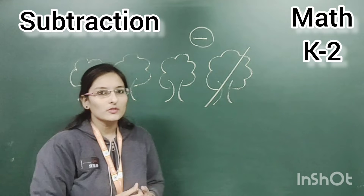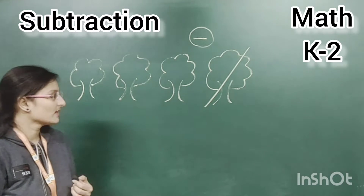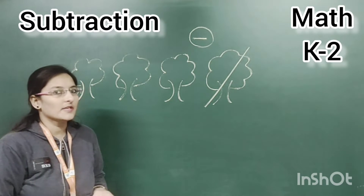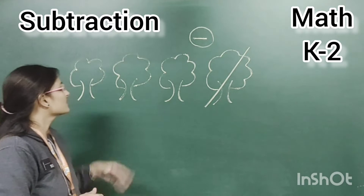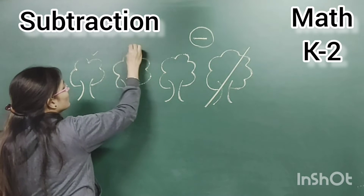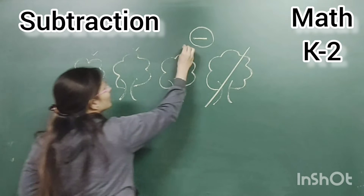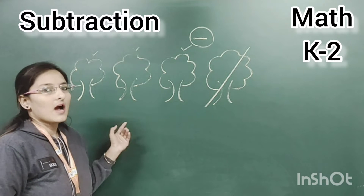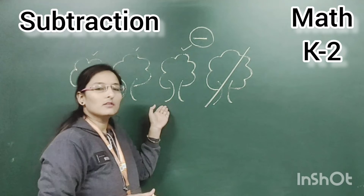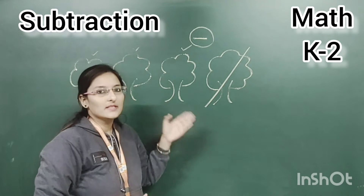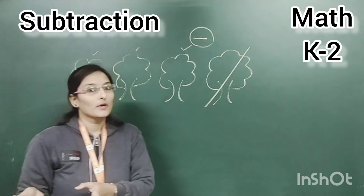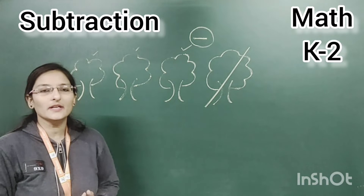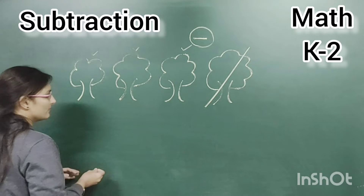So we are not able to see that fallen tree anymore. From that group, how many trees are we able to see because of the rain? One, two, three. Got it? That is the meaning of subtraction — we are now able to see only three trees. To take away from a group or to deduct from a group. Same we will do with numbers.